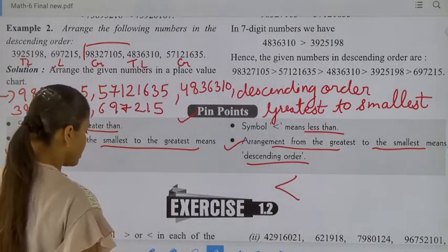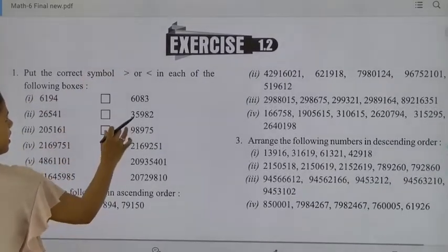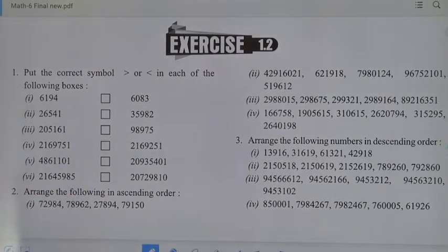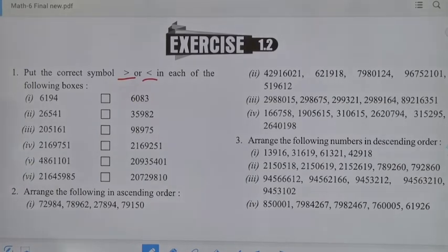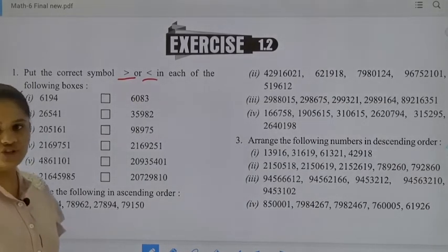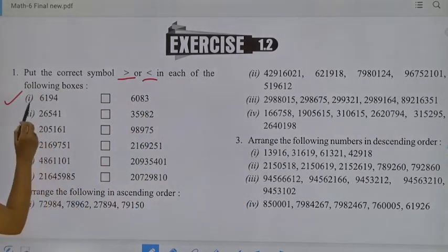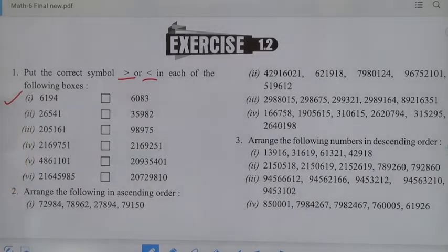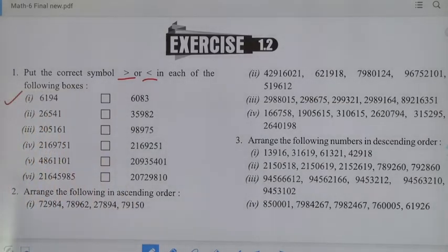Let's start with exercise 1.2: put the correct symbol — greater than or less than — in each of the following boxes. Students, in this question we have to do comparisons of numbers. Let's start with the first one: that is 6,194 and 6,083. Which one is the greatest number? That is 6,194, so we use the greater than symbol.